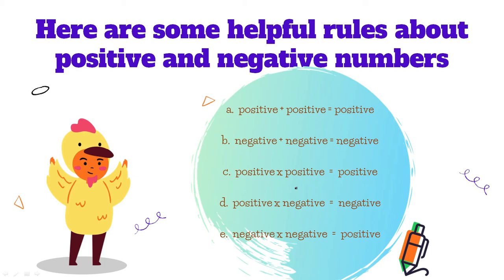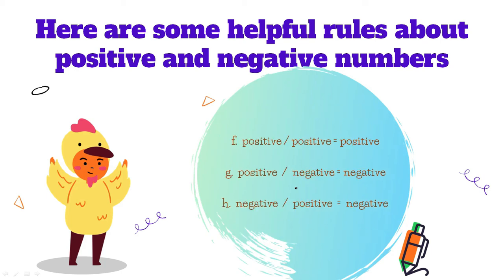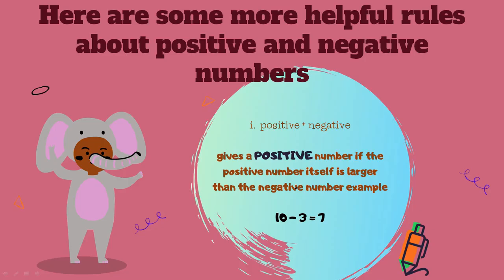It would help if you jot these down. F: a positive number divided by a positive number equals a positive number. G: a positive number divided by a negative number equals a negative number. H: a negative number divided by a positive number equals a negative number.